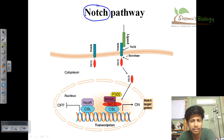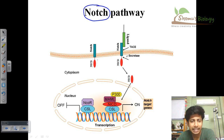The Notch Receptor is a single membrane-spanning, multisubunit-containing protein. Most of its structure is extracellular, with a very small amount present in the cytosol. There is also a small subunit called NICD attached to each of these Notch Receptors, as you can see here.